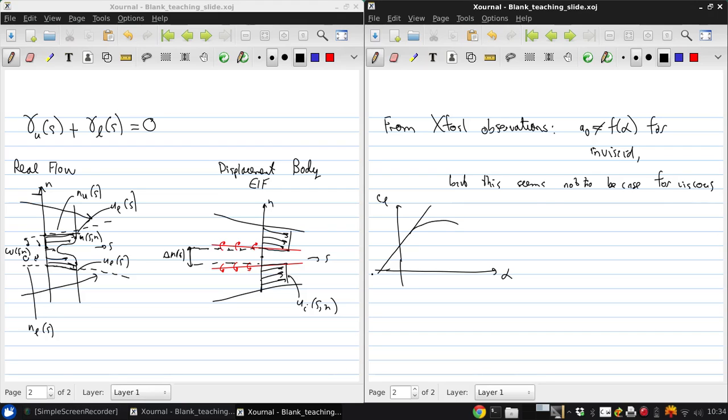So the inviscid model just continues on linearly, whereas the viscous model begins to have a decreasing slope and eventually will reach a maximum.